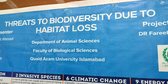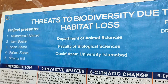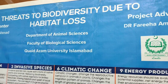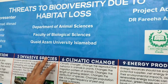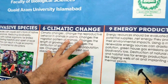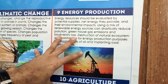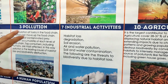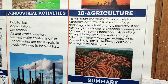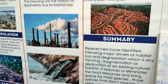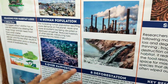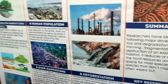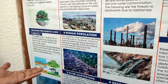They explain the threats to animal biodiversity: invasiveness, climate change, energy production, pollution, habitat destruction, industrial activity, agriculture, human population growth, deforestation, and wildfire.